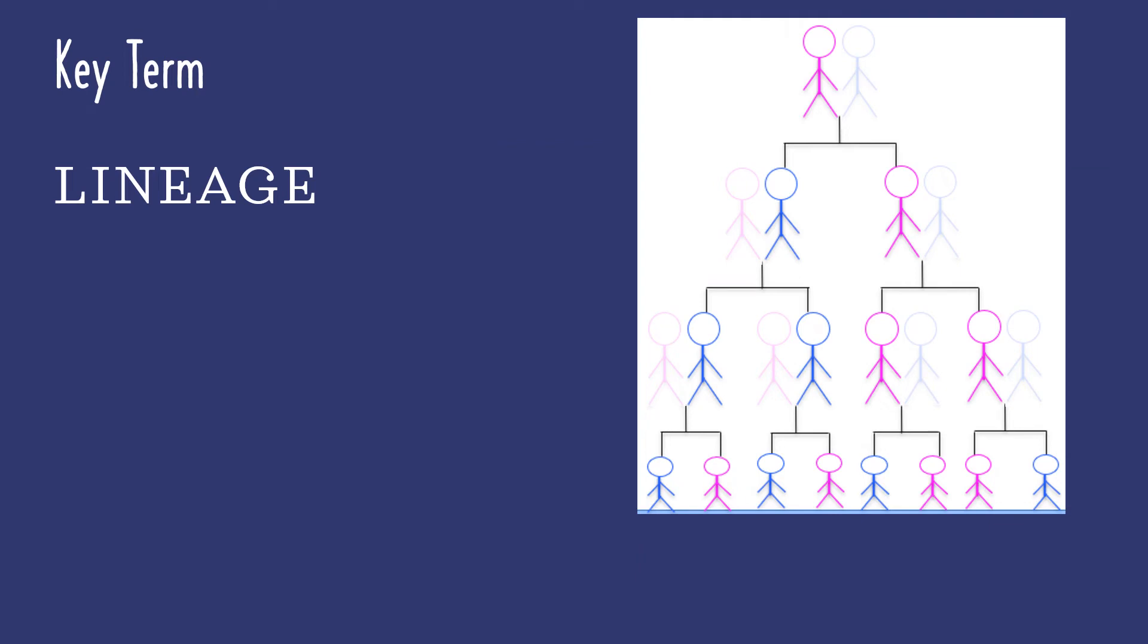This brings us to our first key term, lineage. A lineage is a genetic family who traces their descent from a common ancestor, meaning that everyone in the lineage can follow their bloodline back to the same individual, the ancestor that they have in common.